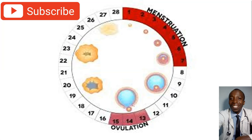Another sign of ovulation is that your body temperature will tend to rise — what we call the basal body temperature is going to spike up when you take your temperature with a thermometer. A further sign is when you use ovulation predictor kits to test your urine; the levels of LH are going to show on the ovulation predictor kits.